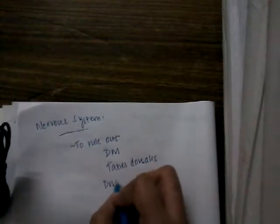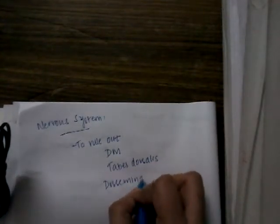Then you should examine the nervous system. This is most important. Nervous system examination is really important because we should rule out tabes dorsalis, disseminated sclerosis, cervical spondylosis.